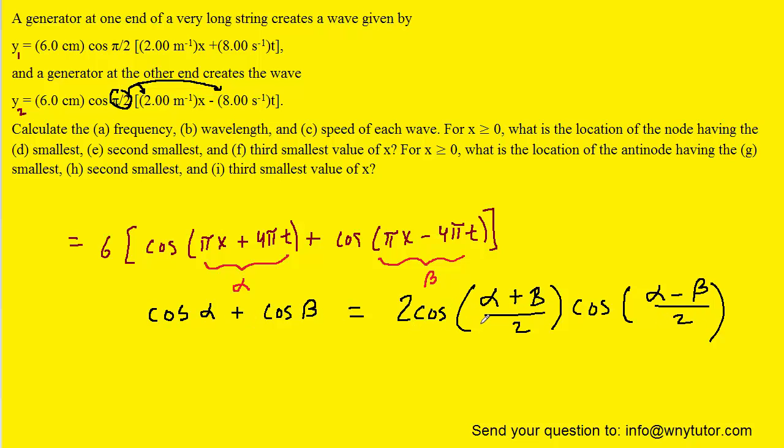So essentially we're going to have to add together our α and β and then divide them by 2 and also subtract our α and β and divide them by 2. So let's try to do that with our current expression here.